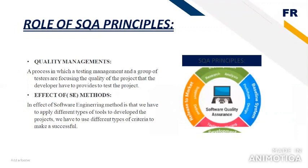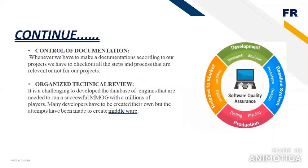Now we apply the role of SQA principles, using different types of principles. First is quality management, in which a group of testers focus on the qualities used in our project. Second is the effect of software engineering methods, applying different tools and criteria to develop our project. Third is control of documentation, checking all processes and documents step by step for relevance to the project.